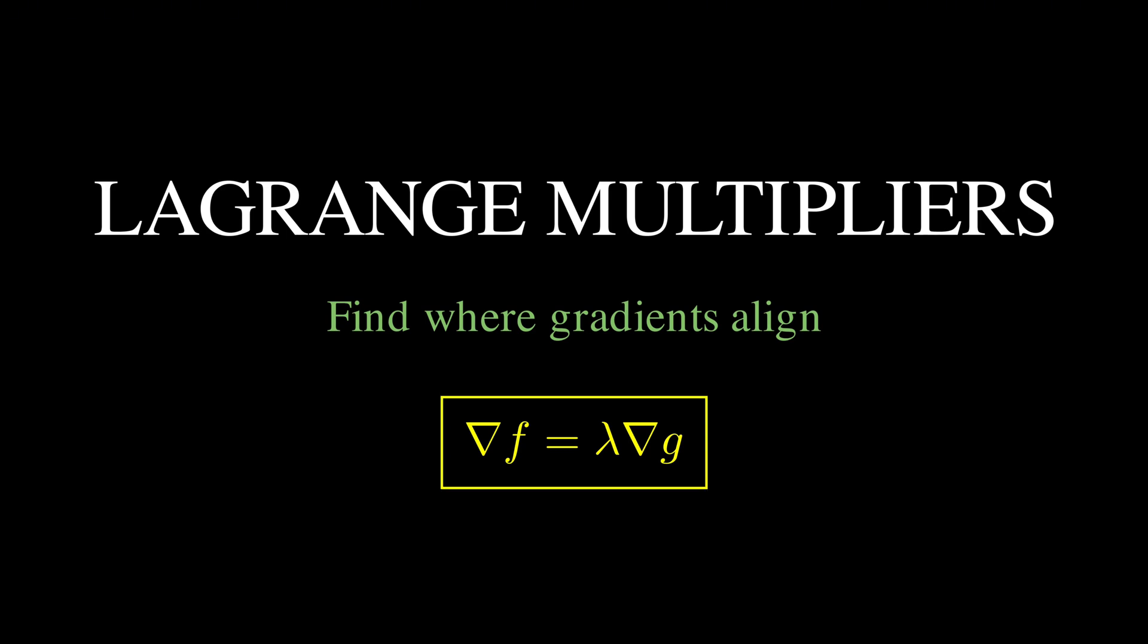The elegance of Lagrange multipliers is that they transform a constraint optimization problem into finding where gradients align. Instead of searching along curves or surfaces, we simply solve a system of equations.